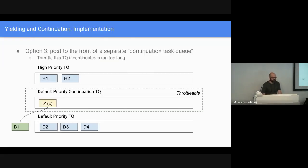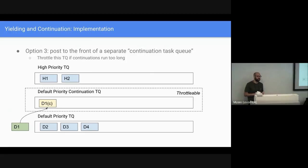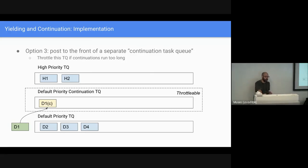We're actually exploring a third option right now, which is to separate where these continuations go. One thing we might do is isolate them — rather than posting to an existing task queue, we make a new task queue just for continuations that we have a bit more control over. We can think of this as a priority wedged in between the two existing priorities, just for continuations. As long as the app isn't abusing it and yields don't go on too long, we can let it finish with the expected semantics. We could also make it throttle-able, allowing some lower priority work to run so we don't starve the world.